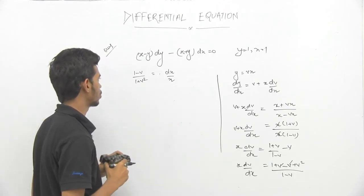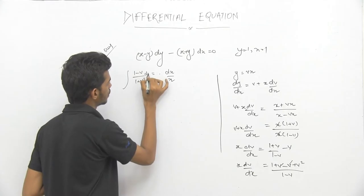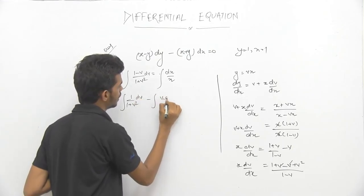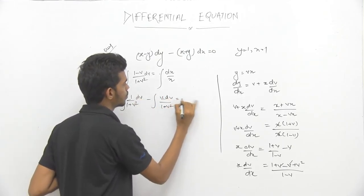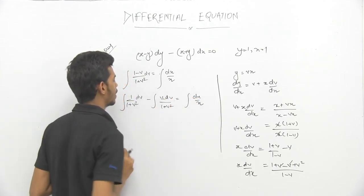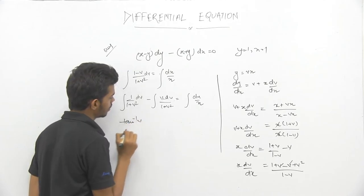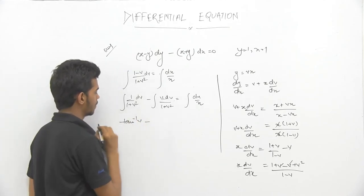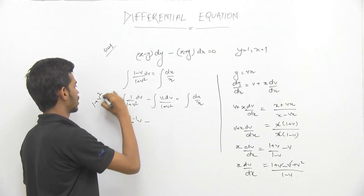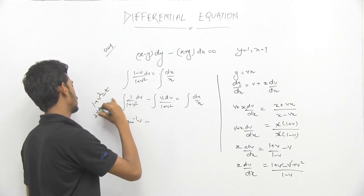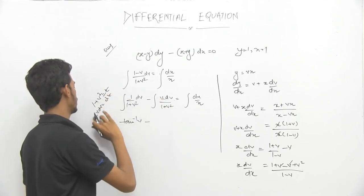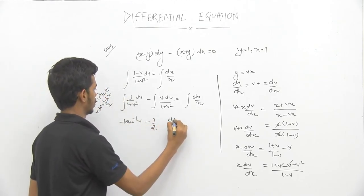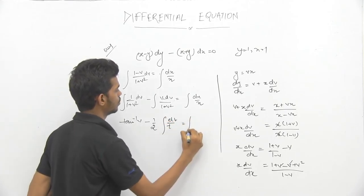Integrating both sides: ∫1/(1 + v²) dv - ∫v/(1 + v²) dv = ∫dx/x. For the second integral, let t = 1 + v², so 2v·dv = dt, meaning v·dv = (1/2)dt. So: tan⁻¹v - (1/2)∫dt/t = log x + c.